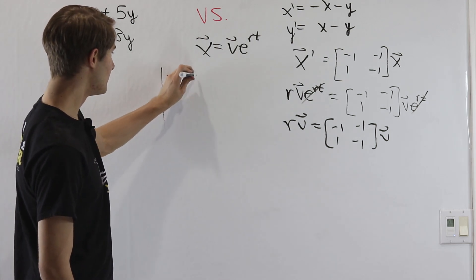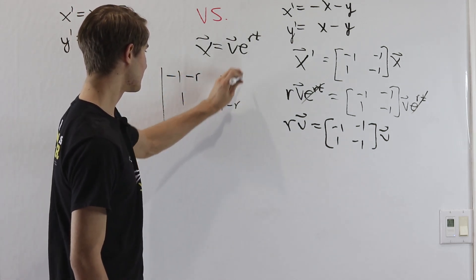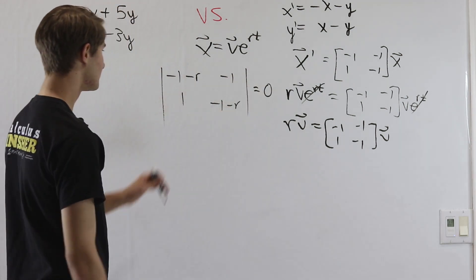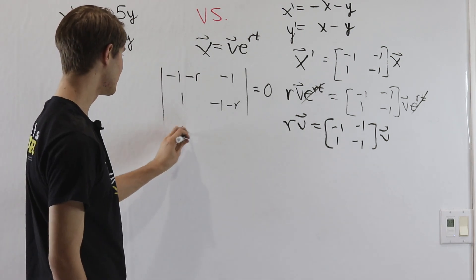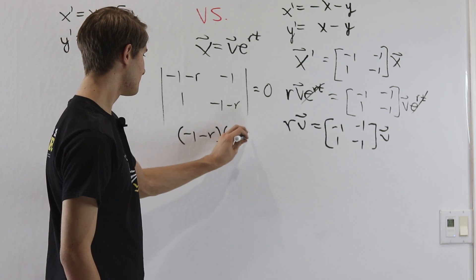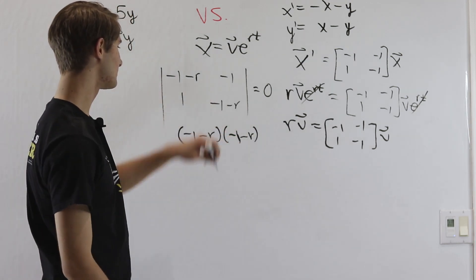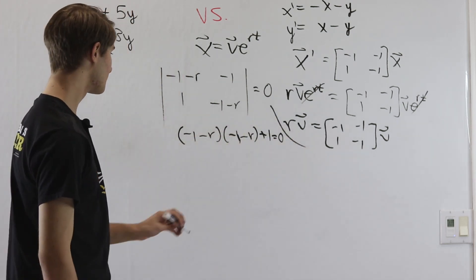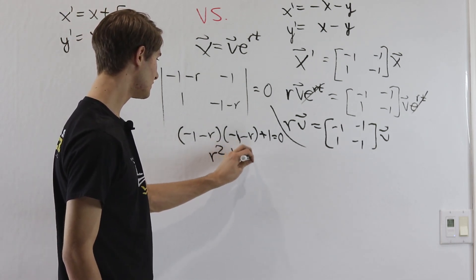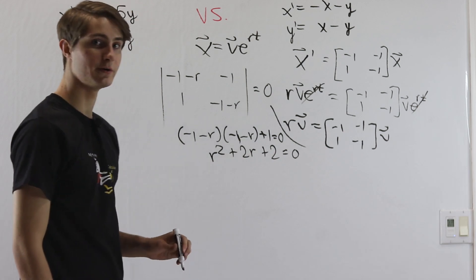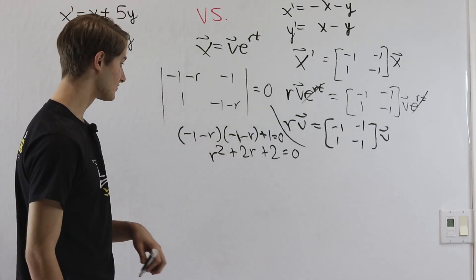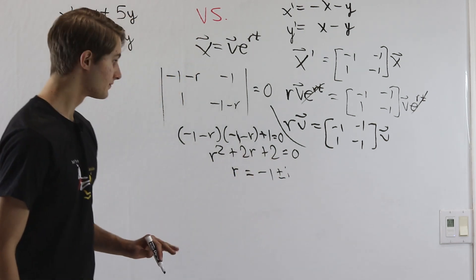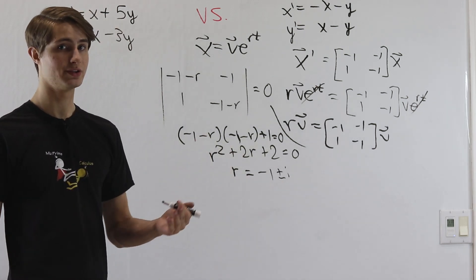We take the determinant of negative 1 minus r, negative 1, 1, negative 1 minus r, set it equal to 0. Multiplying the diagonal entries and subtracting: negative 1 minus r times negative 1 minus r, minus negative 1 times 1, equals r squared plus 2r plus 2 equals 0. Using the quadratic formula, the roots are negative 1 plus or minus i. These eigenvalues are complex.